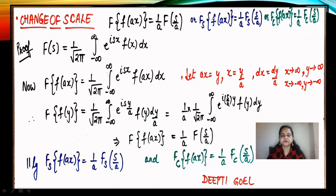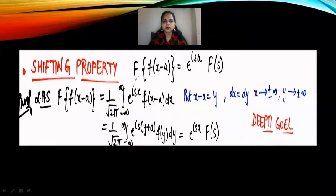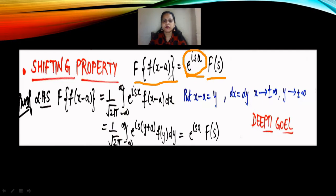Moving to the next property — the shifting property. When the origin x is shifted from zero to a, that is, instead of x we now have x minus a, we call it the shifting property. The result is: F[f(x−a)] = e^(ιsa)·F(s). Wherever the origin is shifted, the exponential carries that value. So the Fourier transform result is multiplied by the factor e^(ιsa).